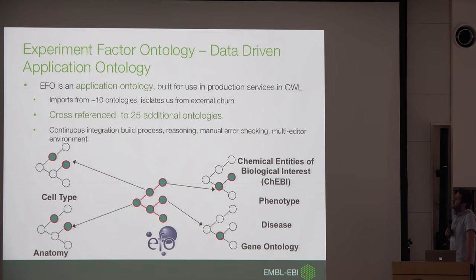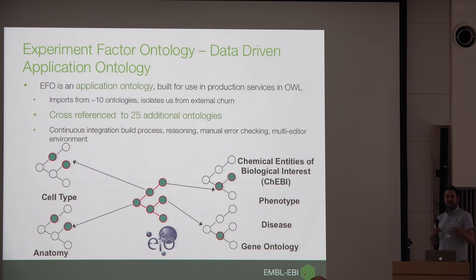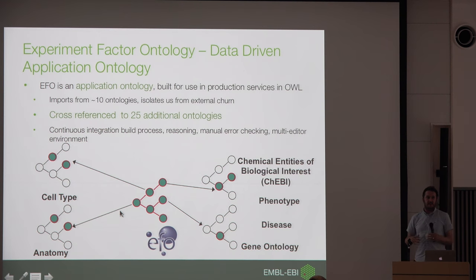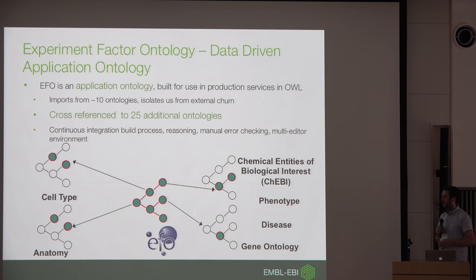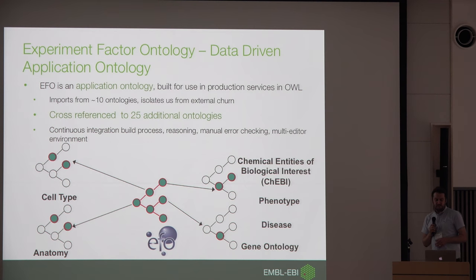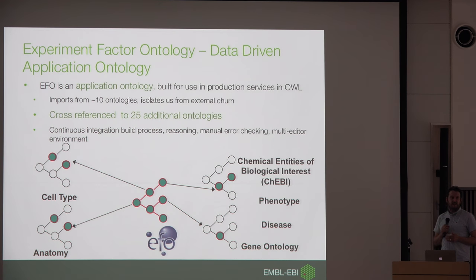I want to mention the Experimental Factor Ontology, which we call our internal data-driven application ontology. EFO basically shields us internally from the ontologies out there in the wild — you have all the OBO Library ontologies used to annotate and curate data, and EFO brings these together in a single consumable view for a unified perspective across ontologies within EBI applications. EFO makes decisions about how to bring in terms, for example classifying HP terms as diseases rather than phenotypes, and it stabilizes ontology versions so we don't get too much reliance on external churn.